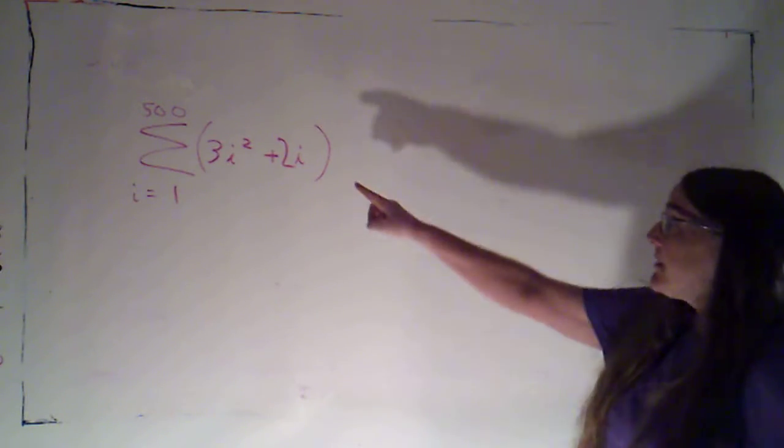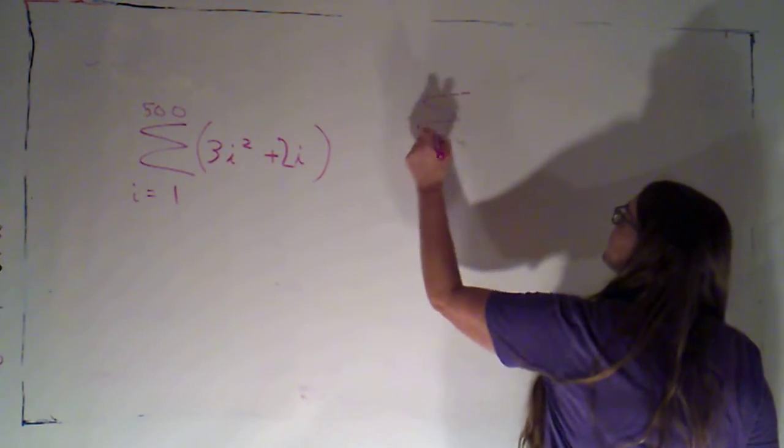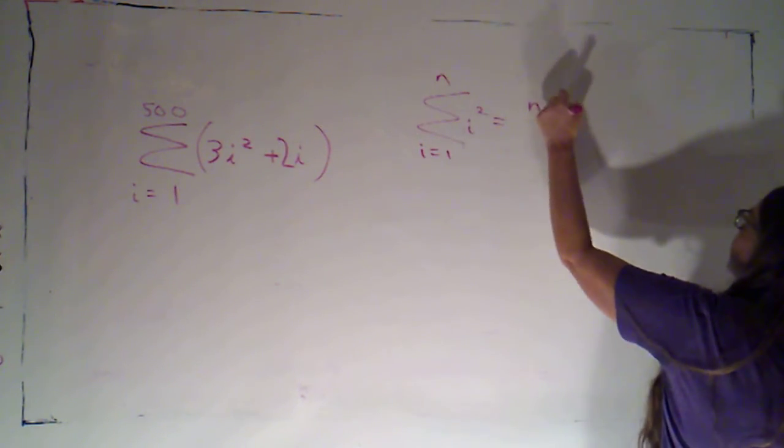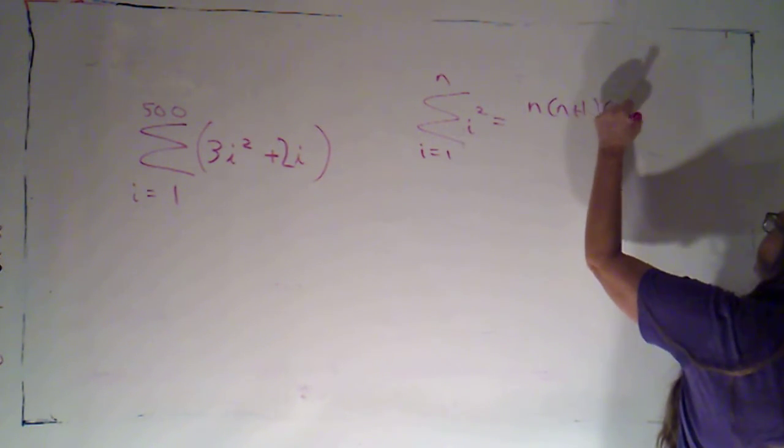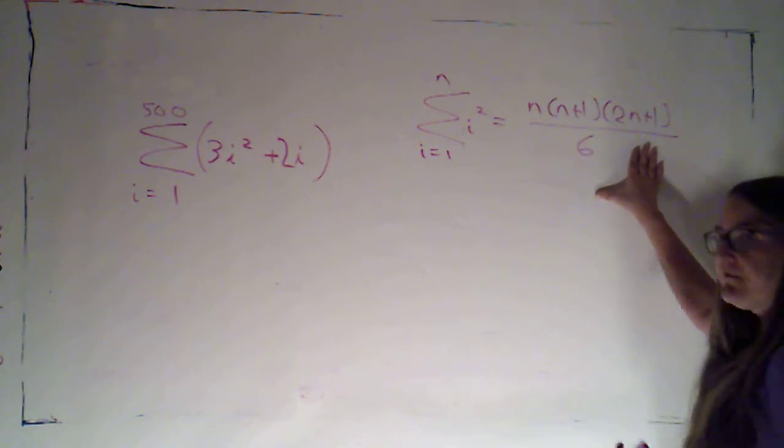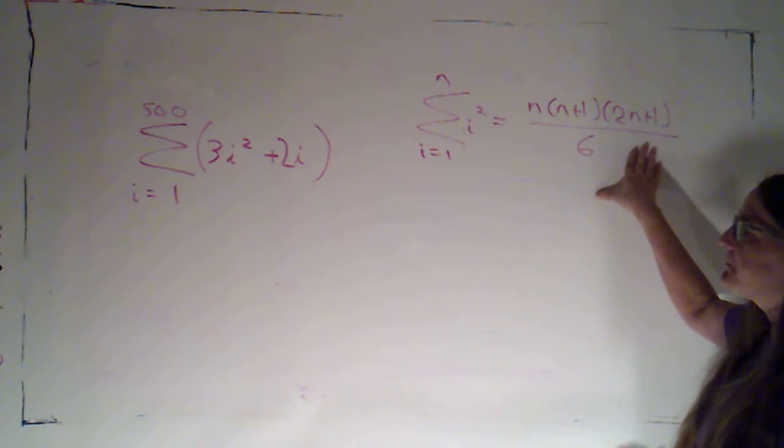Now, I'm going to remind you of the formula for the i squared. So the sum as i goes from one to N of i squared is N times N plus one times two N plus one all over six. That would be provided for you on an exam if you needed it.